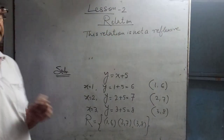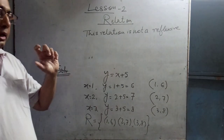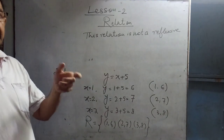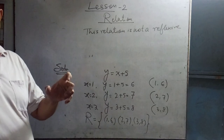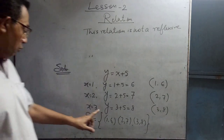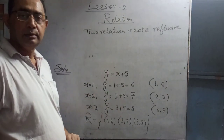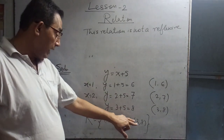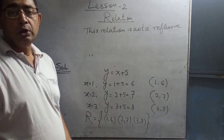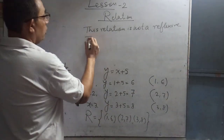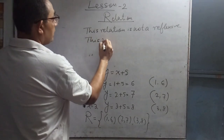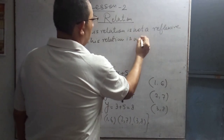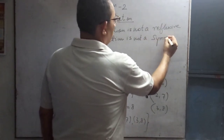Now check symmetric. Symmetric means if (A, B) belongs to R, then (B, A) belongs to R. Here, (1,6) — there is no (6,1). (2,7) — there is no (7,2). (3,8) — there is no (8,3). So this relation is also not symmetric.